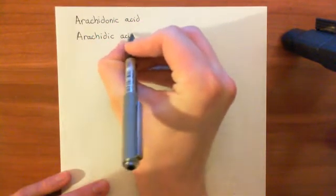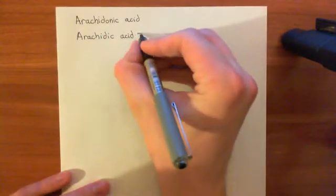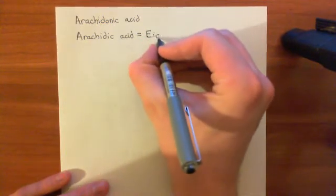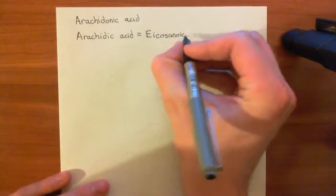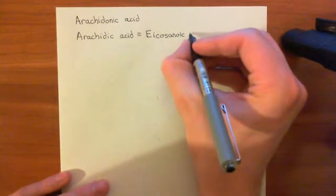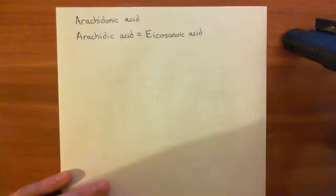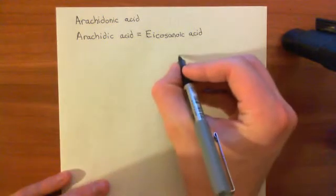Arachidic acid is also known as icosanoic acid. Icosanoic acid tells you better what it actually is, because those of you who can remember your platonic solids will remember that an icosahedron is — it's not 12 — it's a 20-sided shape. So now we know what this is.